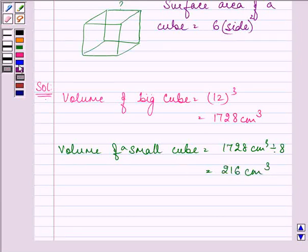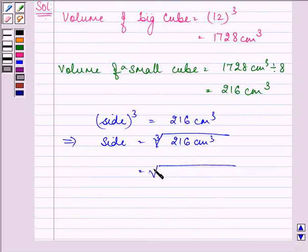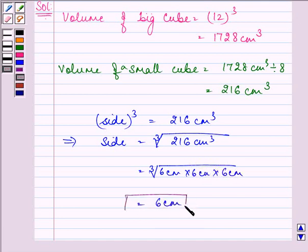Also volume of a small cube will be side cubed. So the value of side cubed is given to us as 216 cm³. That implies we can find out this side by finding out the cube root of 216 cm³. It is 6 cm into 6 cm into 6 cm. That gives us the answer as 6 cm. So this is the side of the new cube.